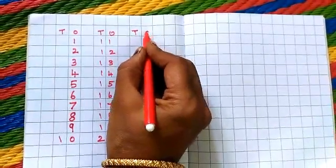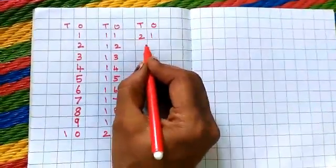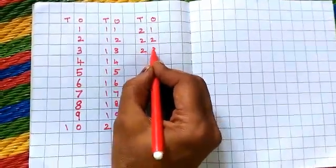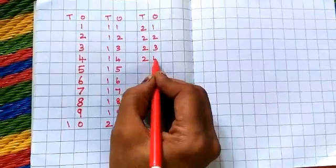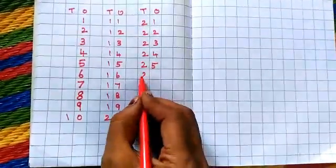10's place, 1's place. 2, 1, 21. 2, 2, 22. 2, 3, 23. 2, 4, 24. 2, 5, 25.